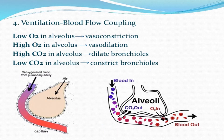During ventilation and blood flow coupling between the lungs and capillaries: low oxygen in the alveolus leads to vasoconstriction, decreasing capillary volume; high oxygen concentration causes vasodilation. High carbon dioxide in the alveoli dilates bronchioles, while low carbon dioxide constricts bronchioles. These are the changes in ventilation due to varying oxygen and carbon dioxide availability in the alveoli.